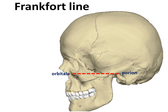There is a note here. The lower border of the orbit, the so-called orbitale, is exactly at the same horizontal line as the upper border of the external auditory canal, the so-called porion. So if we imagine a line connecting these two points, it will be the Frankfurt horizontal line. This line is opposite to the deepest point of the middle cranial fossa with a variation of around plus or minus 7 mm.